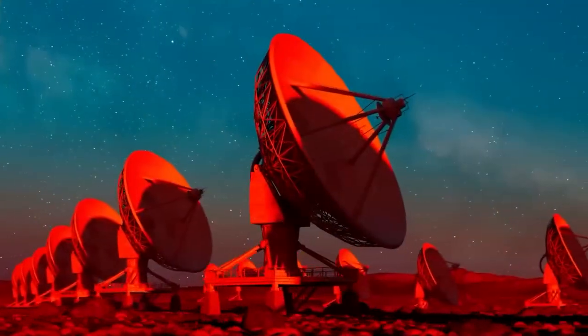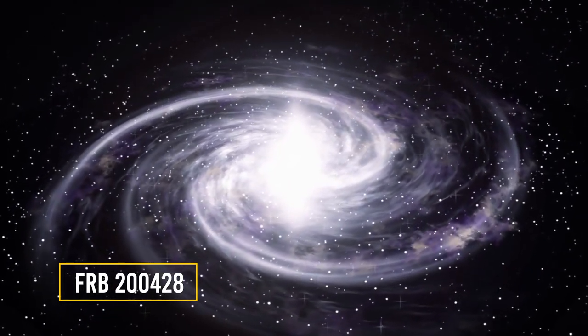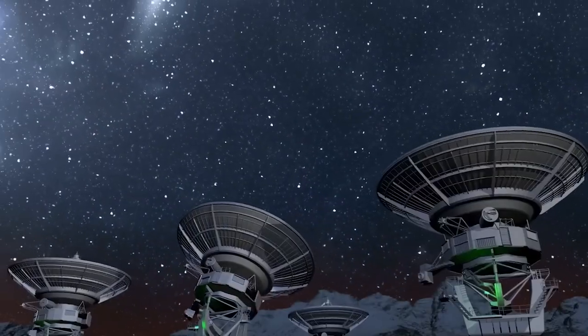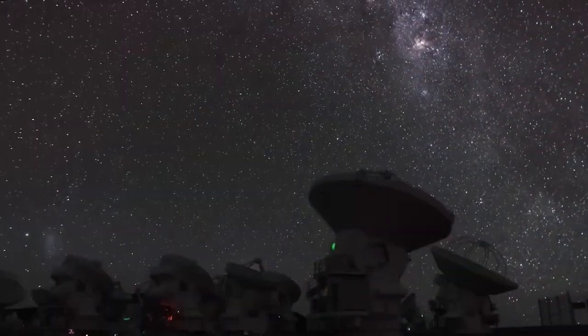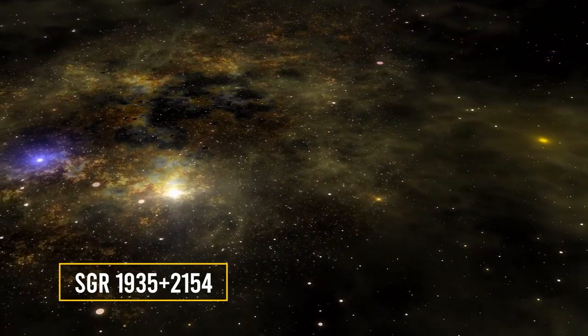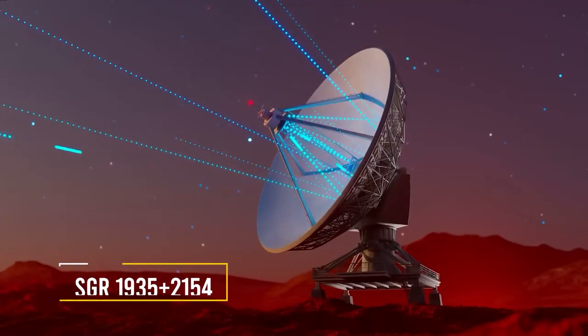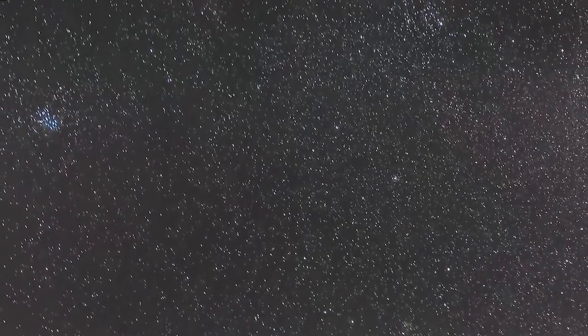This most recent FRB, also known as FRB 200428 by astronomers, was discovered to have emanated within our galaxy's constellation of Vulpecula, which just happens to be the home of the galactic magnetar SGR-1935-2154. It was also preceded by a burst of X-rays, which piqued scientists' interest even more.